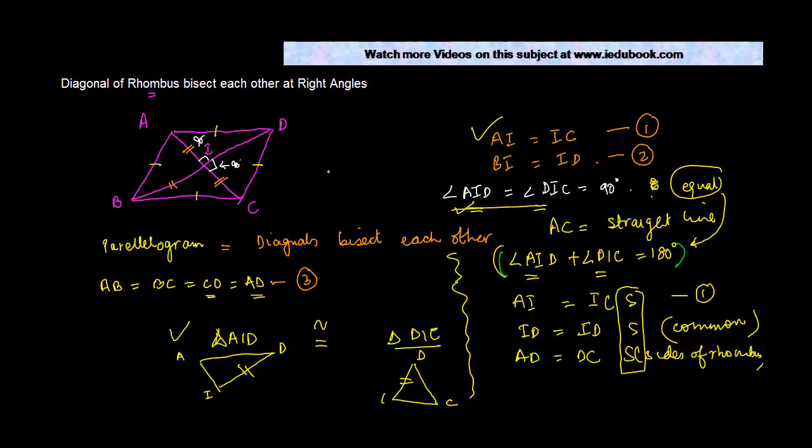But both of them are equal. Hence, we can also write that, let's call this as X. So, we can also write this as X plus X is equal to 180 degree or X is equal to 180 divided by 2, 90 degree.